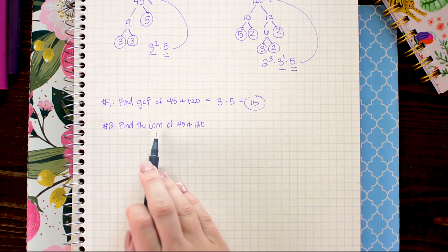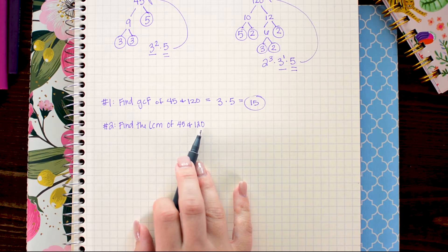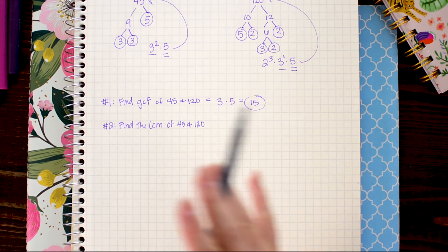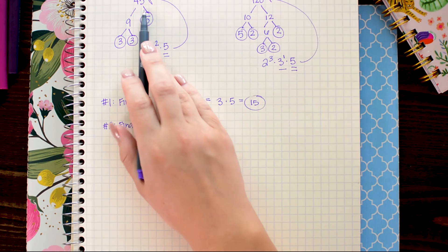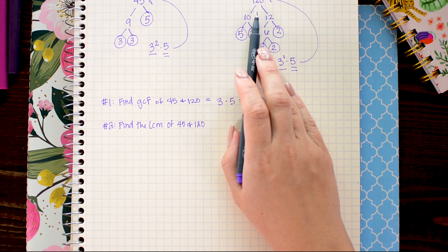Now let's find the least common multiple of 45 and 120. So we're looking for the smallest number that both 45 and 120 go into. You could do this longhand by listing out multiples of 45 and multiples of 120 and looking for the one that the smallest one that occurs on both lists.